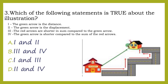Number 3. Which of the following statements is true about the illustration? Statement 1: The green arrow is the distance. Statement 2: The green arrow is the displacement. Statement 3: The red arrows are shorter in sum compared to the green arrow. Statement 4: The green arrow is shorter compared to the sum of the red arrows. A. 1 and 2. B. 2 and 4. C. 1 and 3. D. 2 and 4.